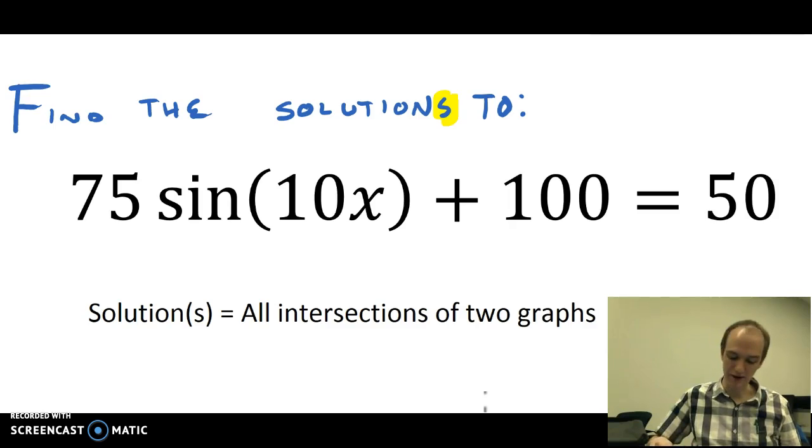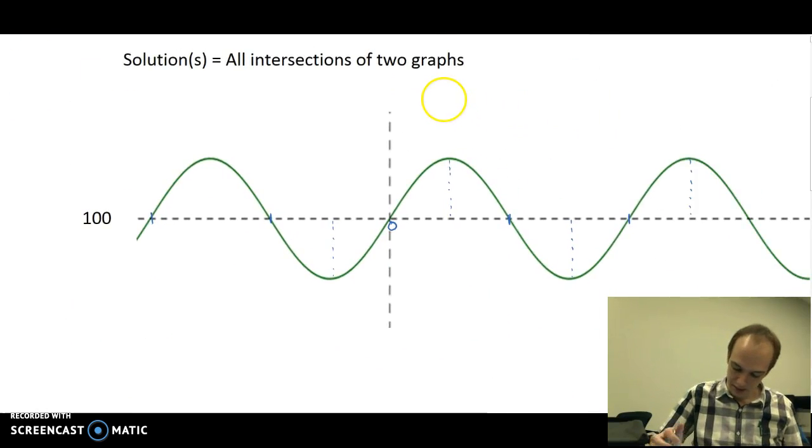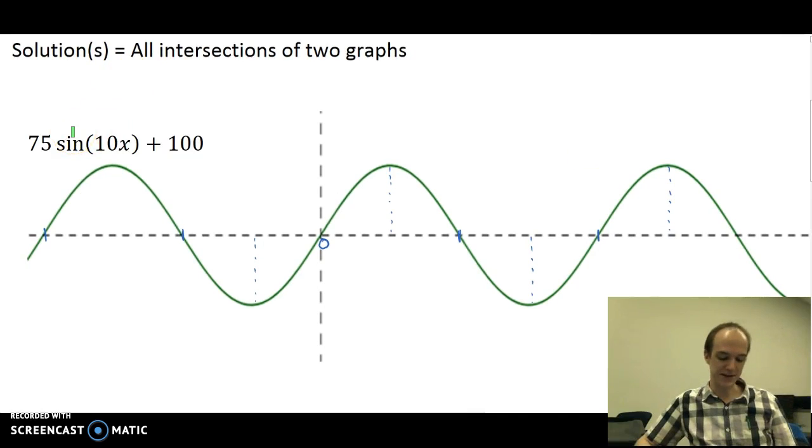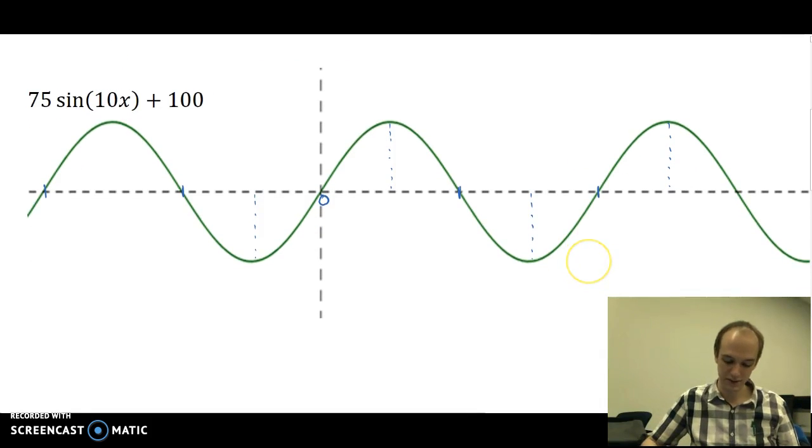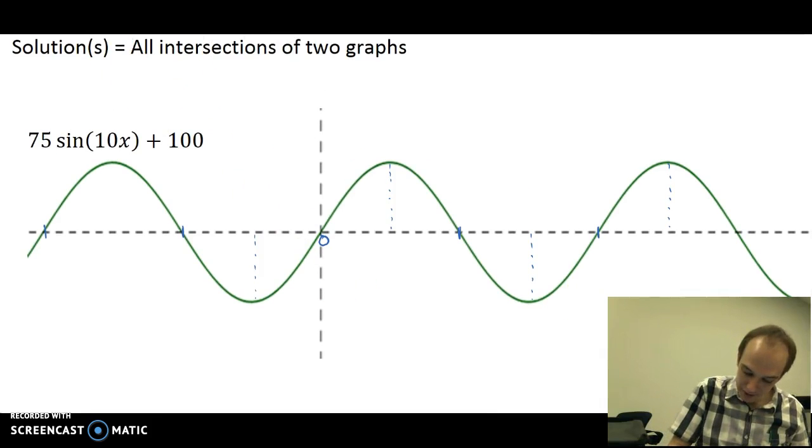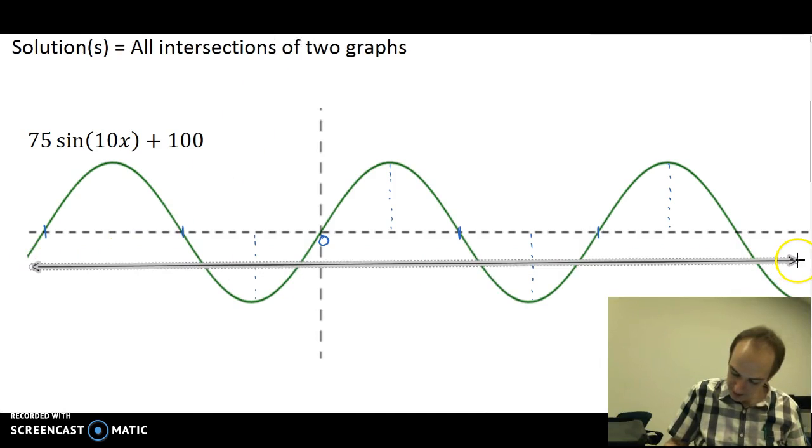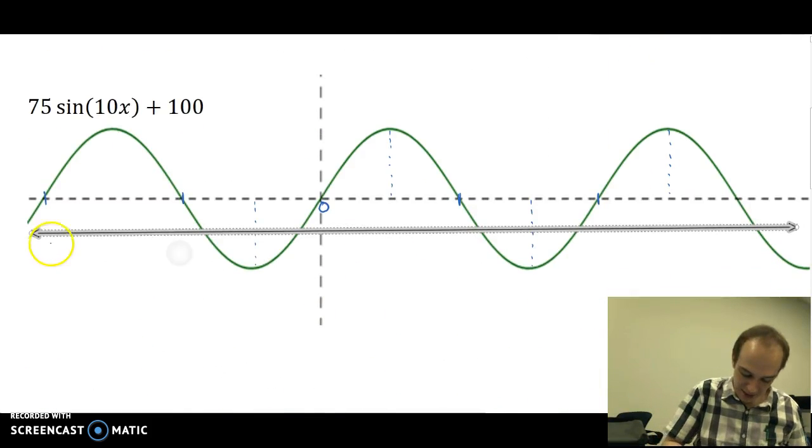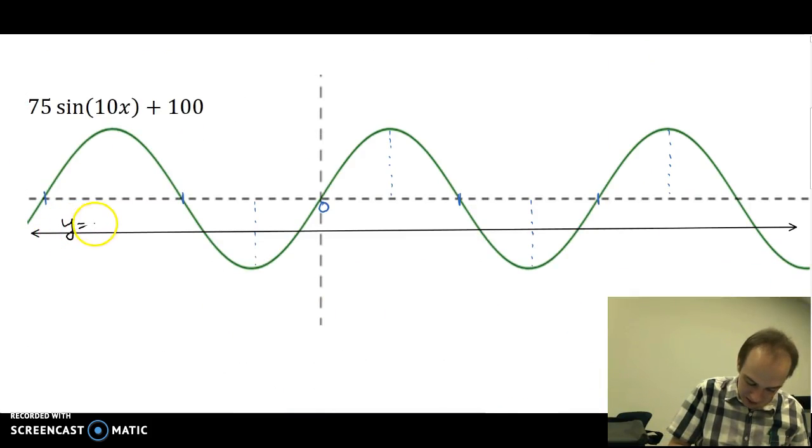Here's what the graph looks like right away. This is the graph of our function, trig function, 75 sine of 10x plus 100. The other graph that we're going to have to look at here is a graph of a line. Since the original equation was equal to 50, this is going to be the line y equals 50.